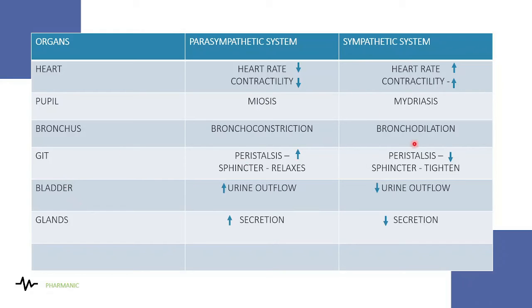For the GI tract, peristalsis decreases during sympathetic activation — in a stressful situation we don't want to defecate or urinate, so peristalsis becomes very low and the sphincters tighten, decreasing urine outflow. For the glands, we often notice that in tense or fearful situations our mouth becomes dry, because sympathetic activation decreases glandular secretion.